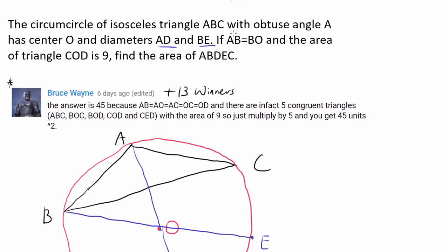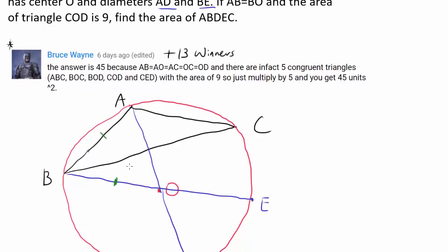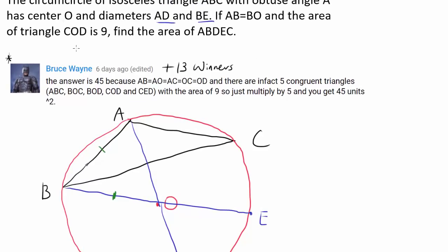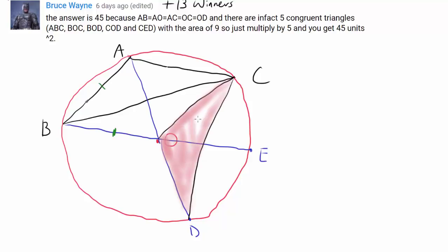We know AB is equal to BO — so AB is right here and BO is right here. And we know the area of triangle COD is 9. Triangle COD is this triangle shown — let me shade it pink. So triangle COD right here has area 9.